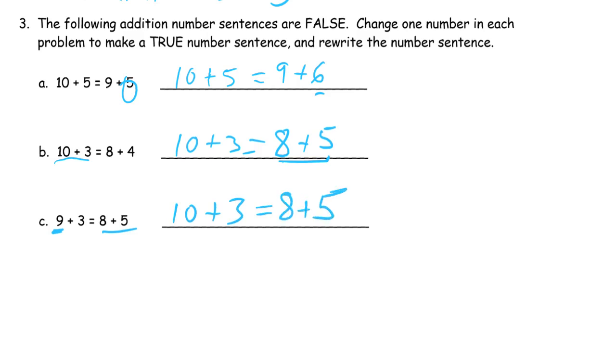But we did what we were supposed to do. We changed one number to make it a true number sentence. There are a lot of other answers that you could write that would be good for these. You could change any one of the four numbers to make it a true number sentence. So your answers don't have to be the same as mine. Maybe you can find your own ways to do it.